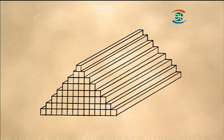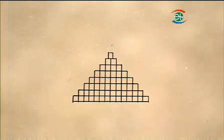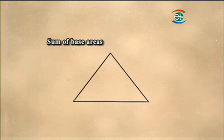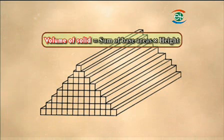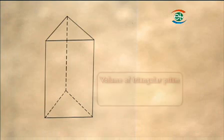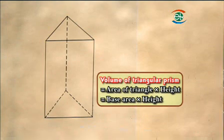If the solid is further divided into smaller cuboids, it gets close to looking like a triangular prism. Its base is similar to a triangle. In other words, the total sum of the base areas is about the same as the area of the triangle, and its volume is about the same as the volume of the triangular prism. Therefore, the volume equals the area of the triangle times height, that is, base area times height.